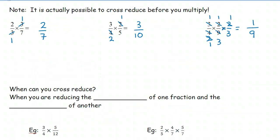So just to summarize, cross-reducing can be done when you are reducing the numerator of one fraction with the denominator of the other fraction.